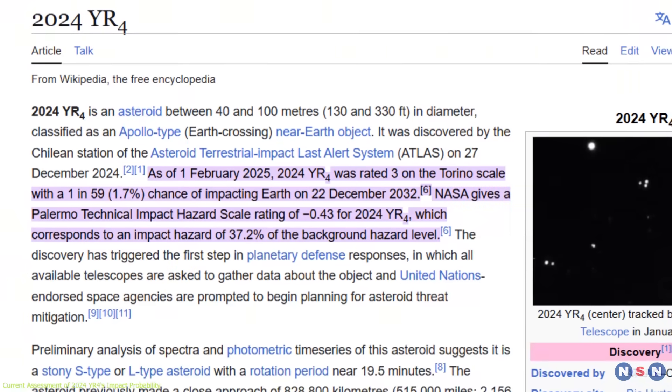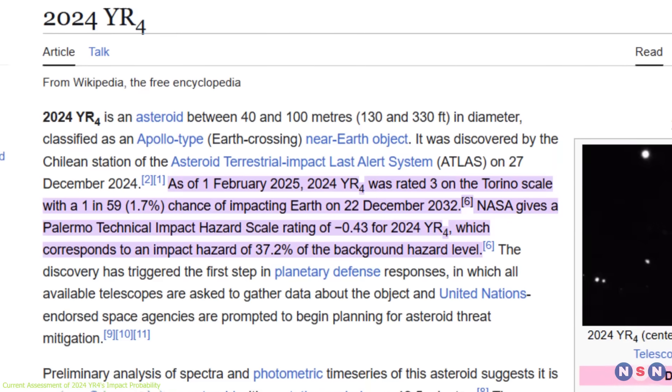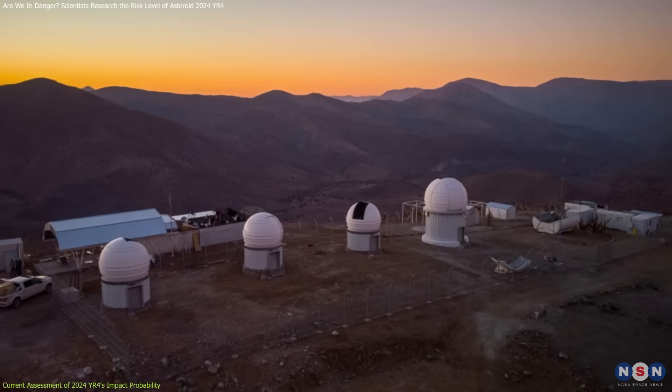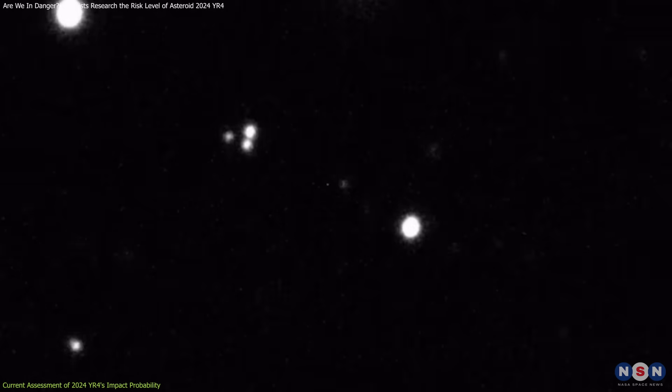Asteroid 2024 YR-4 was discovered on December 27, 2024, by the El Sauce Observatory in Chile, and its unique characteristics have made it a focus of scientific study.